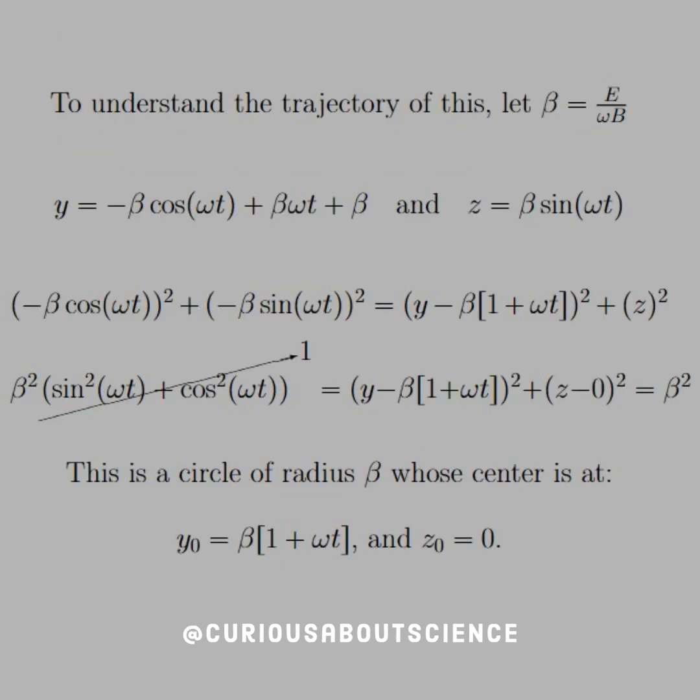And then, using a similar method to find a trajectory, we just let beta equal e over omega b, do the same methodology, and we see that we have a circle of radius beta again. This time, the starting position, or the center, is at z naught equals 0, and y naught equals beta times 1 plus omega t.